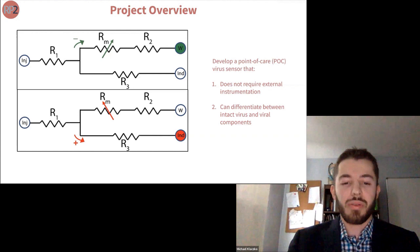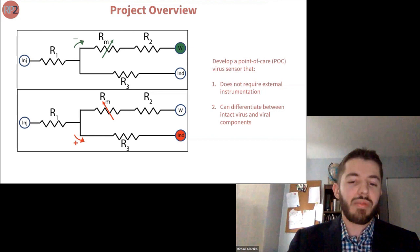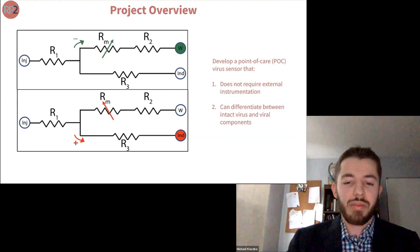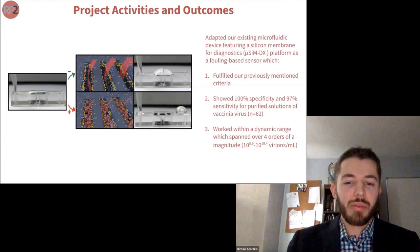In a positive test result, virus capture clogs the membrane and increases its resistance so that the bottom path becomes the new path of least resistance. In this manner, we are able to determine if a test is negative or positive depending on where fluid protrudes from the device.